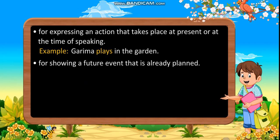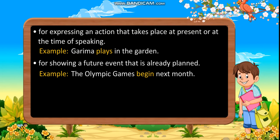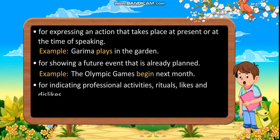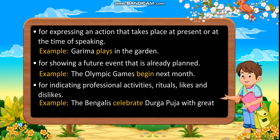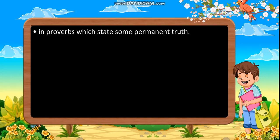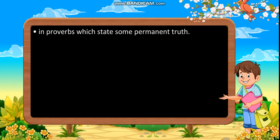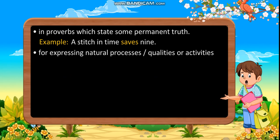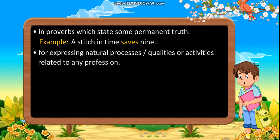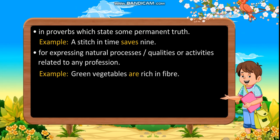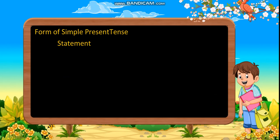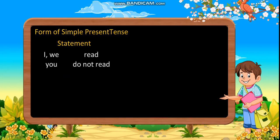For showing a future event that is already planned. Example: The Olympic Games begin next month. For indicating professional activities, rituals, likes and dislikes. Example: The Bengalis celebrate Durga Puja with great fervor. In proverbs which state some permanent truth. Example: A stitch in time saves nine. For expressing natural processes or qualities. Example: Green vegetables are rich in fiber.